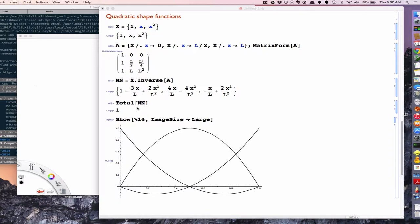So I plug in l equal to 1, so it just goes from 0 to 1 along the x-axis. And then I plot those three shape functions. So this is for a quadratic interpolated polynomial. So there's a node at x equals 0, a node at 1 half, and a node at 1.